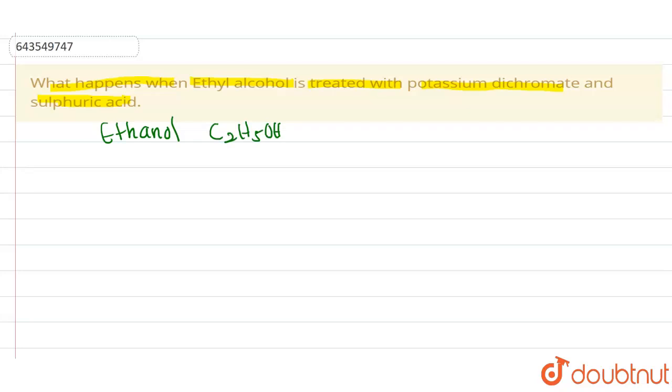And we see here potassium dichromate and sulfuric acid. We can also say acidified potassium dichromate. It is a strong oxidizing agent, so it oxidizes whatever we react with it.